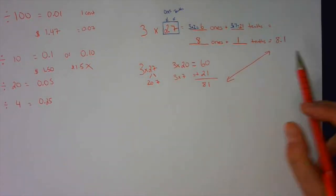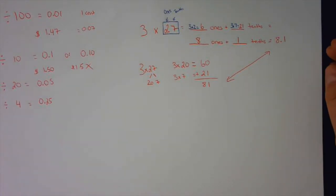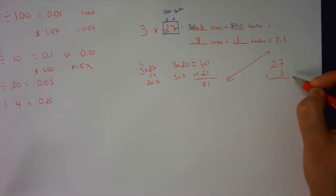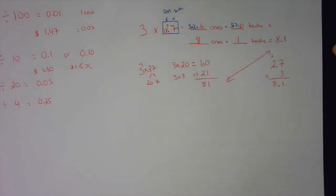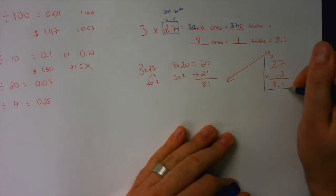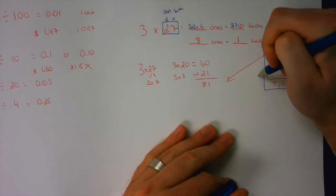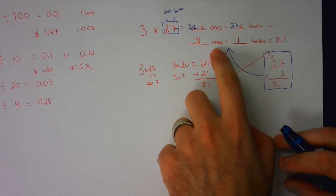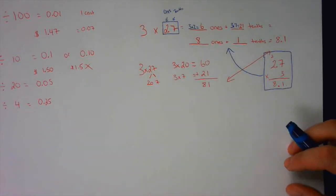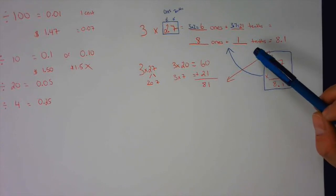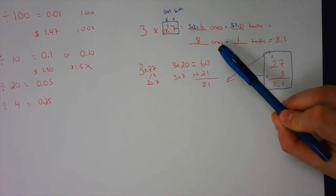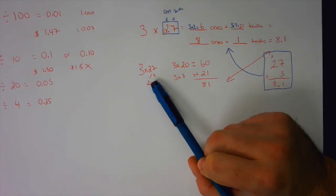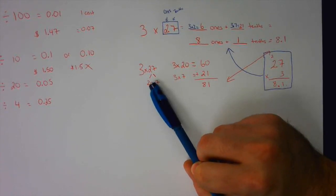You should make a connection here — 8.1 is the same answer you'd get doing it the old-fashioned way: write 2.7 multiplied by 3 and carry out the multiplication. That is what you're doing in your head, but for some of you the steps happen so fast it's hard to break them down. This step-by-step approach should help. Hussein's strategy of breaking numbers apart — the same strategy we've been using to multiply — can be used effectively with decimals as well.